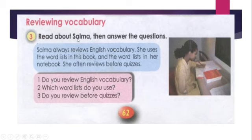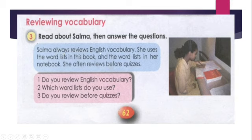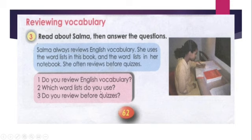Reviewing vocabulary — read about Salma, then answer the questions. What is she doing here? She's revising vocabulary. She has a dictionary and she's writing — maybe she's drawing, maybe she's using pictures, or categorizing words into groups. Salma always reviews English vocabulary. She uses the word lists in this book and the word list in her notebook. She often reviews before quizzes. Do you review English vocabulary? Which word list do you use? Do you review before quizzes? At the end of the book we have a list of vocabulary — you have to learn them, revise them, and revise before quizzes. That's all for now, thank you very much.